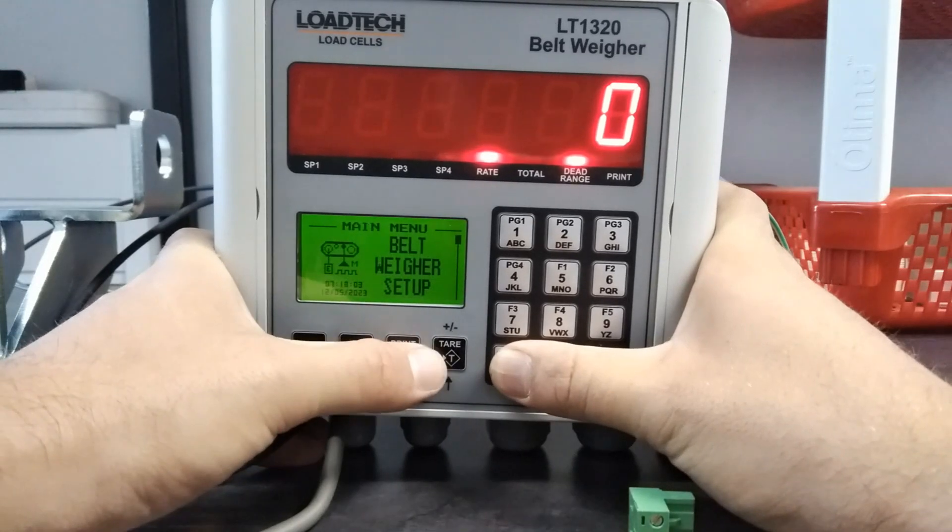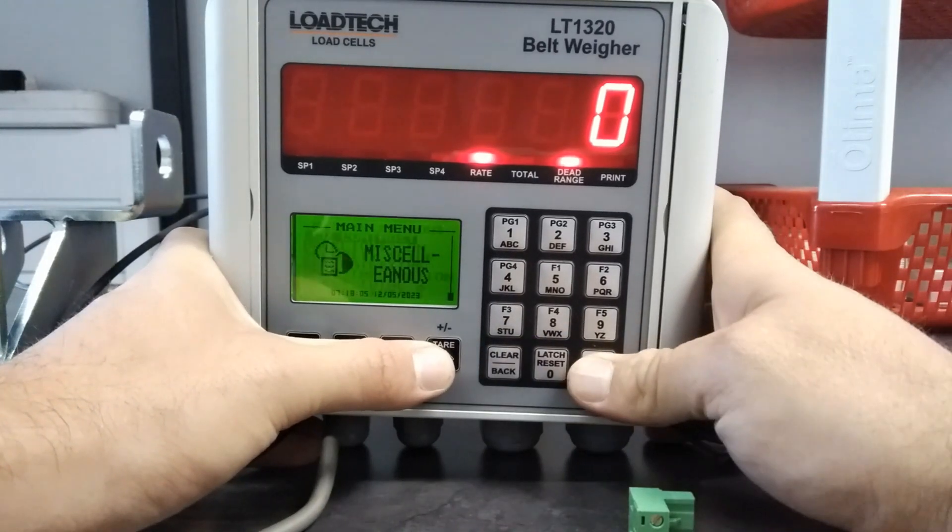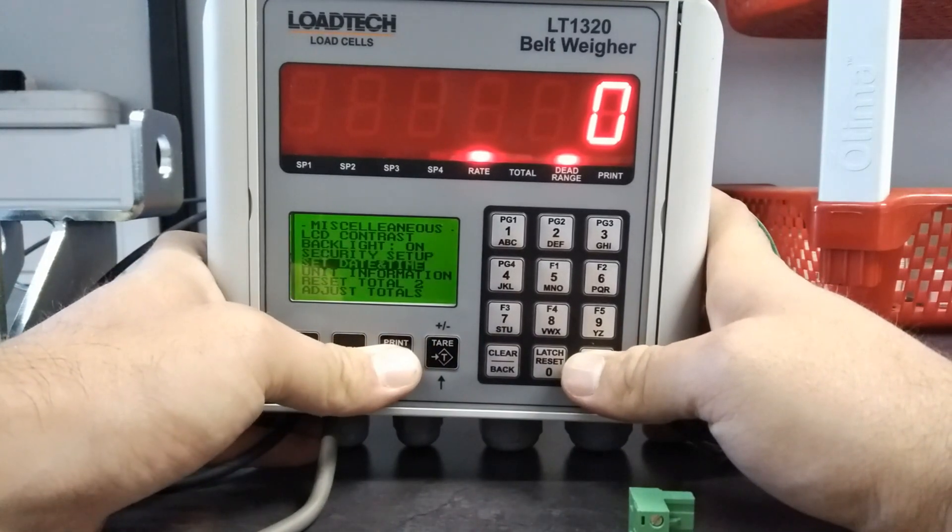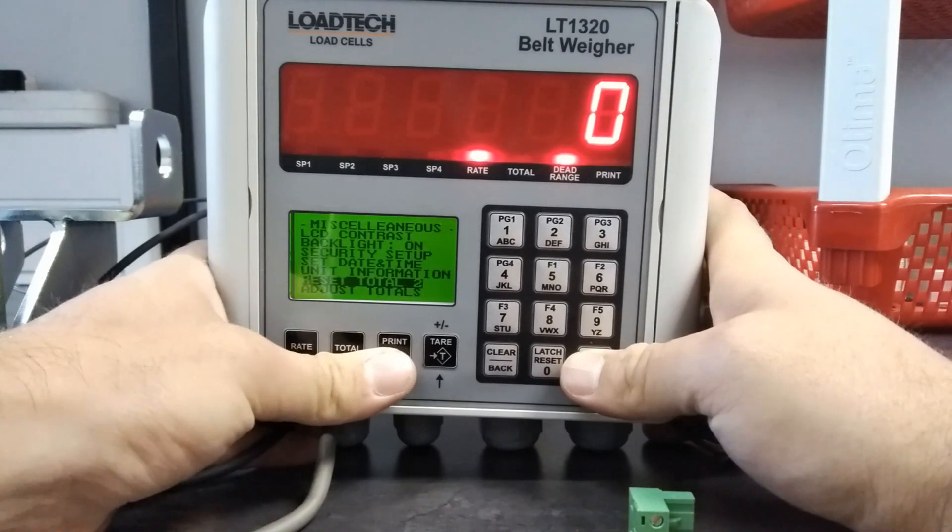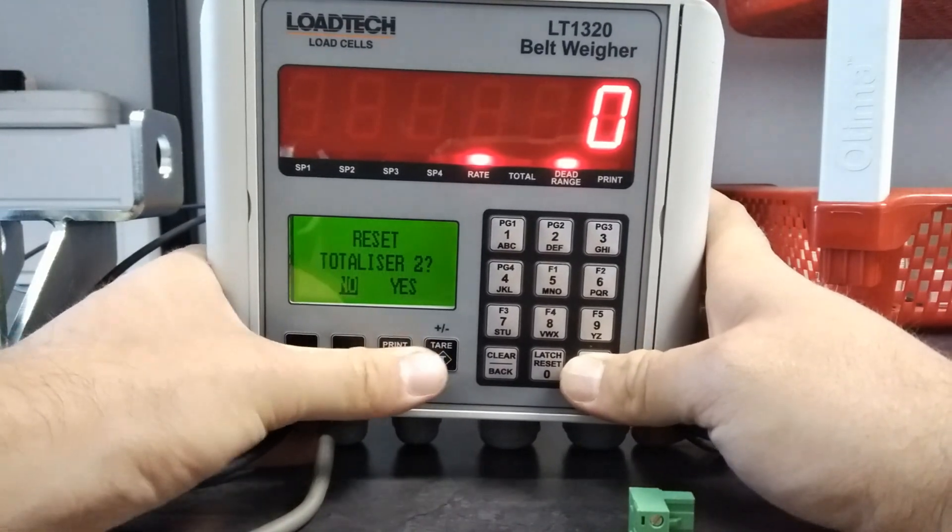As a quick side note, if you want to reset your total number two, you have to go into your menu, into miscellaneous, and select reset total two, which is the second last from the bottom.